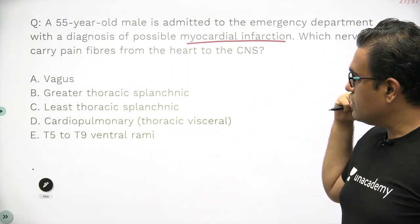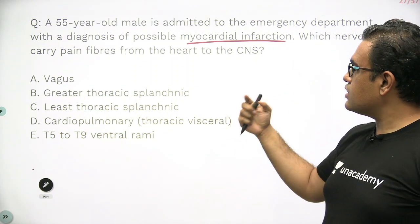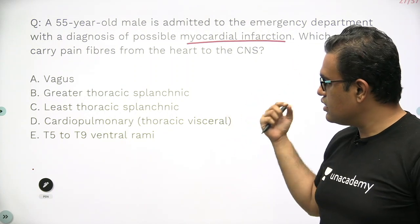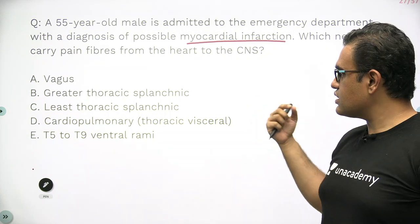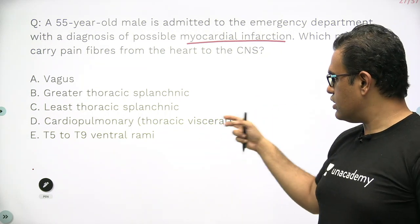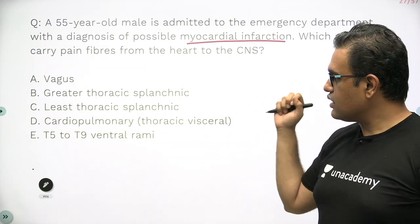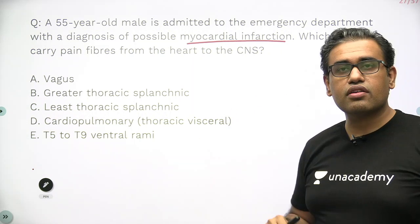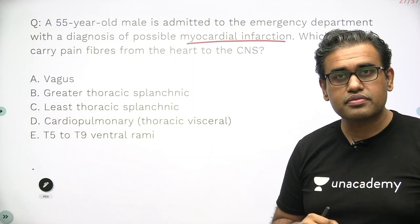The options are: A) Vagus, B) Greater thoracic splanchnic, C) Least thoracic splanchnic, D) Cardiopulmonary or thoracic visceral, and E) T5 to T9 ventral rami.